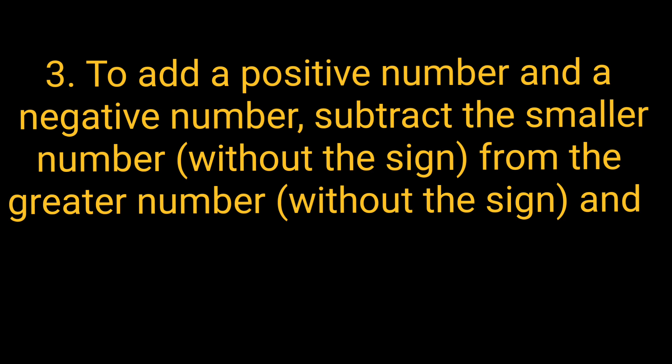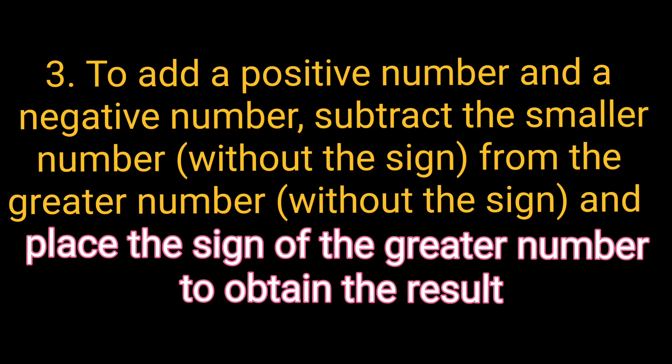The third rule is to add a positive number and a negative number. Subtract the smaller number without the sign from the greater number without the sign and place the sign of the greater number to obtain the result. Now this means that when we are adding a positive number and a negative number, we actually subtract the smaller number from the greater number and forget about the signs. Just take the smaller number and the greater number, do subtraction, and then you take the sign of the bigger number.